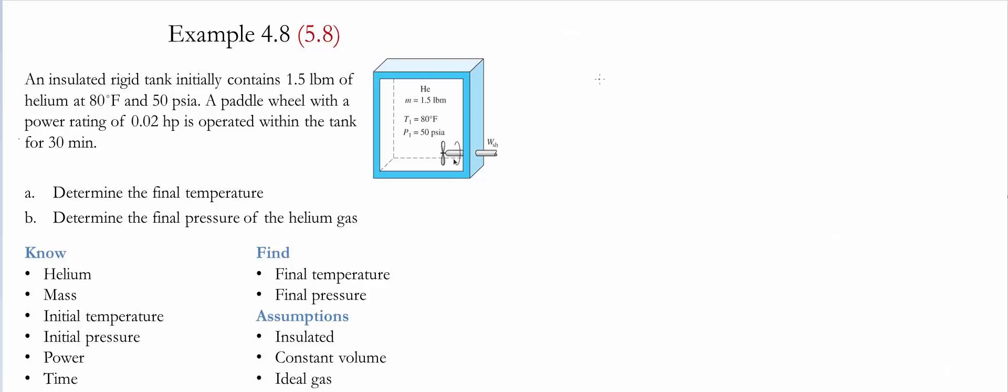In order to find the final pressure, we use the ideal gas relationship, P1*V1 divided by T1 equals P2*V2 divided by T2. Since this is a rigid tank, the initial volume and the final volume are equal to each other. And this relationship simplifies to P1 divided by T1 equals P2 divided by T2.